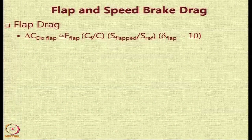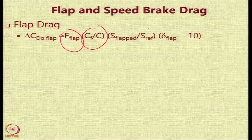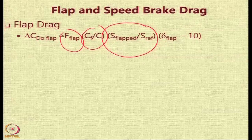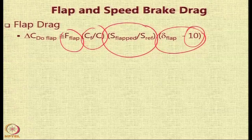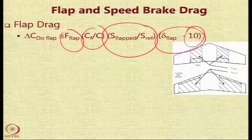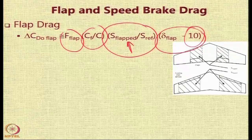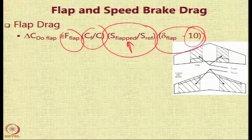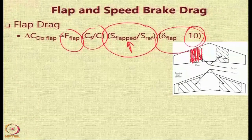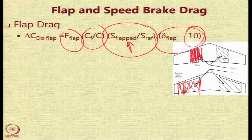Flaps and speed brakes are also huge contributors to drag. Flap drag is estimated by a factor F_flap, which is a function of flap type, flap chord ratio, flap area to wing area ratio, and delta_flap (the flap deflection angle). Deflections up to 10 degrees contribute negligibly and can be ignored; only deflections beyond 10 degrees are assumed to add significant drag. The flapped area is not just the area covered by the flaps, but the wing area under the flap span extent.